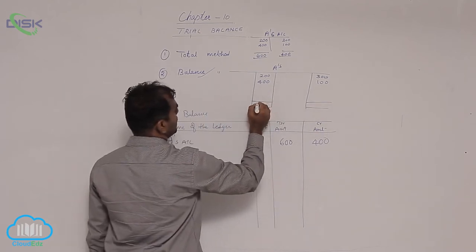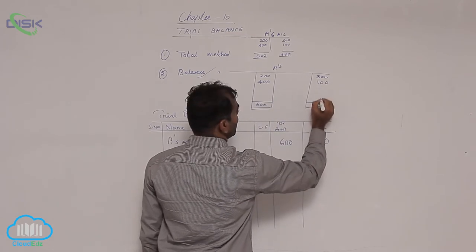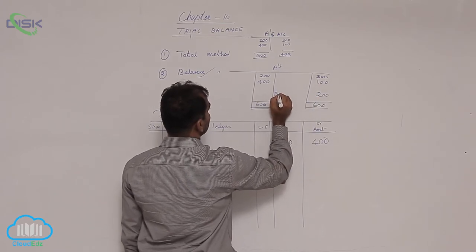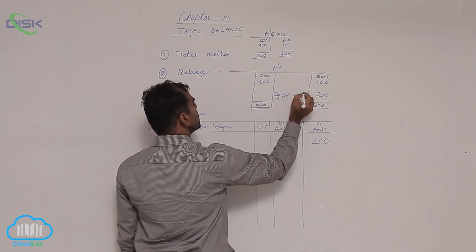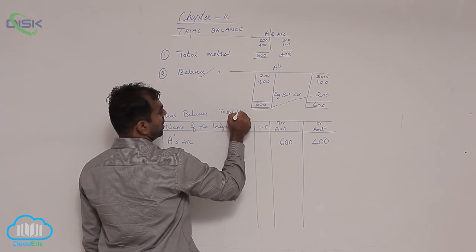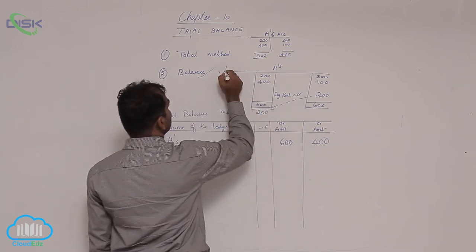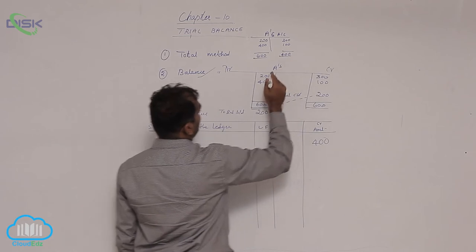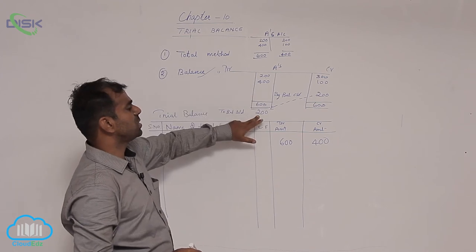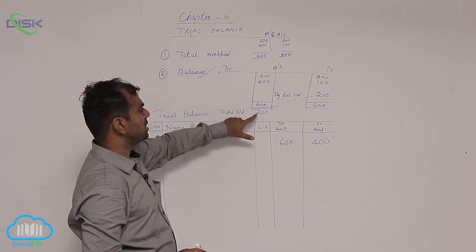If we have to balance this ledger, the total is 600 here. And because this is 400, I have to put 600. 600 minus 400, 200 is my balance. I will write my balance carried down. When I bring to opposite side, it will become balance brought down, because I have to open it. This is how you remember, we close the ledgers. This 200 is on debit side. When 200 is on debit side, we say A's account is showing debit balance of 200.